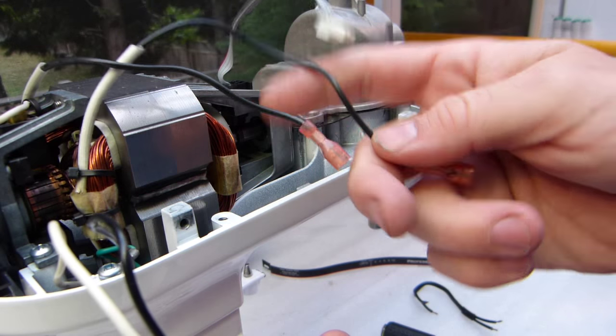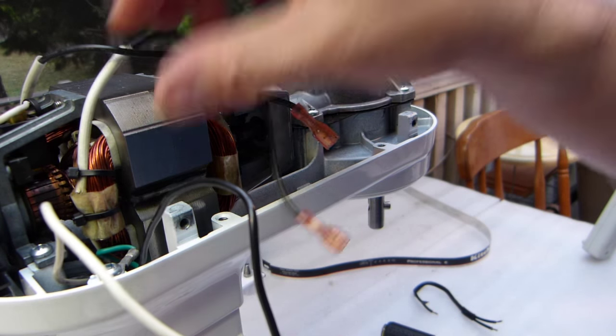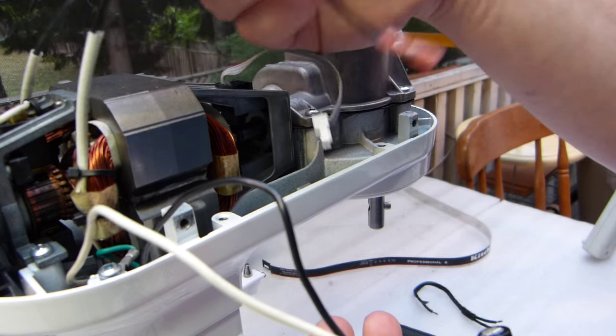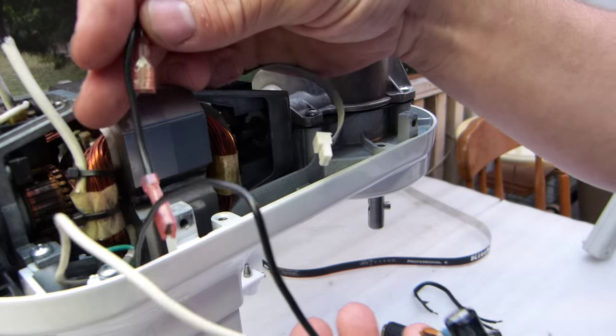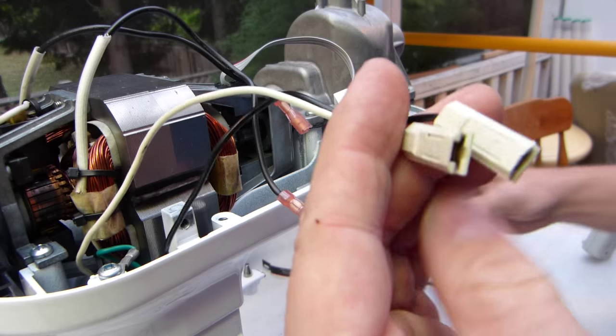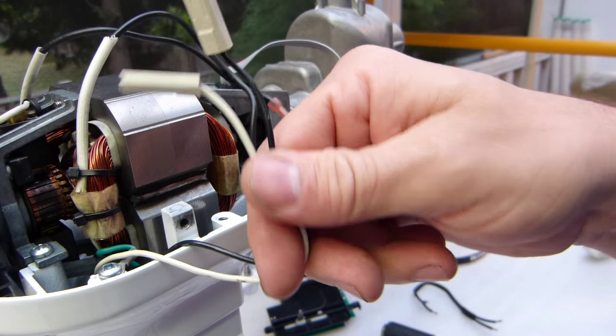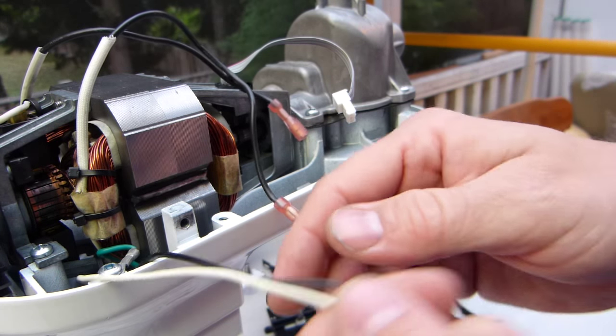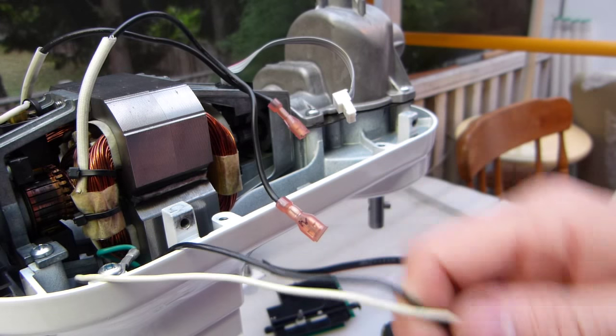These two are both black, and on the new circuit board it doesn't matter which one of these wires is connected to which point on the circuit board. Then the other two wires that you have - one black, one white - are coming out from the cord.